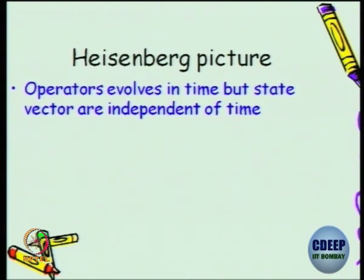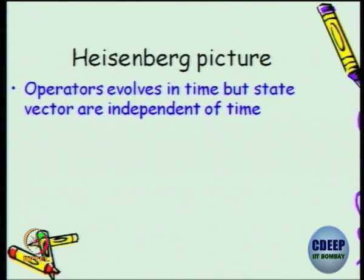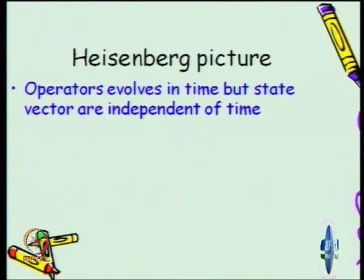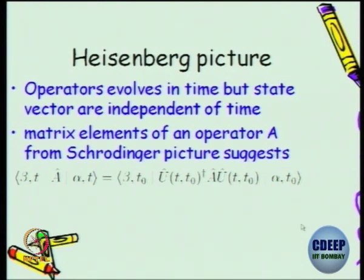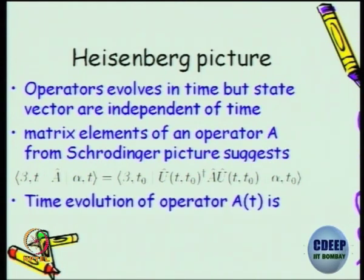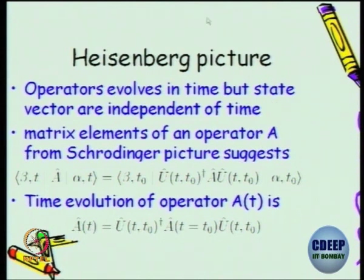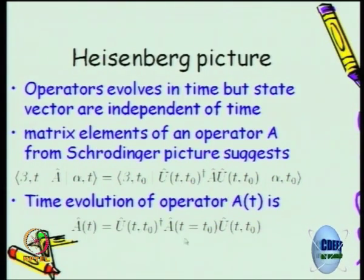That different picture is called the Heisenberg picture. It is the converse: make the state vector frozen at some specific time T₀ — do not allow it to evolve in time — but make all your linear operators corresponding to observables, which are Hermitian operators, evolve in time. But what is the form? It is not arbitrary. It is dictated by the matrix element which we saw earlier. The form is suggested by looking at the equation: there is a time evolution of operator A, starting at T₀, performed in this way.